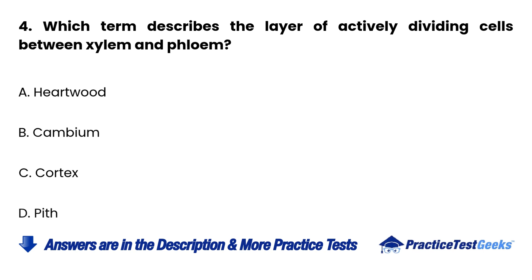Question 4: Which term describes the layer of actively dividing cells between xylem and phloem? a. Heartwood. b. Cambium. c. Cortex. d. Pith.